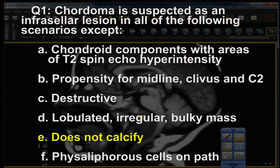Choice C — destructive — is true: it has amputated C2 and destroyed the basilar tip of the clivus. Choice D — lobulated, irregular, bulky mass — it is bulky, though this one happens to be a little smoother and less lobulated than typical; still frequently seen. Choice E is the one that doesn't fit: these lesions ARE associated with calcification and bone destruction, so you may see bone fragments and calcification together.